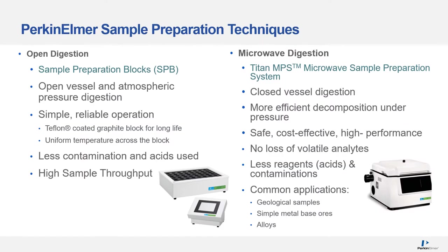PerkinElmer provides a portfolio for sample preparation including a sample preparation block (hot block) and a Titan microwave digestion system. The sample preparation block is used for open digestion and is an upgrade from a hot plate. Its advantages include simplicity of use, high throughput, and uniform temperature for reliable and reproducible operation. It reduces contamination errors from acids and vessels and is an ideal digestion extraction method for geological samples.